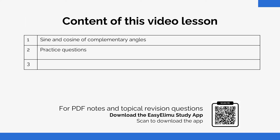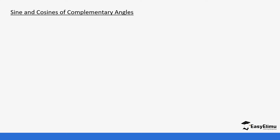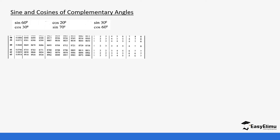We are looking at the relationship between sine and cosine with angles that complement each other. For complementary angles, we are going to check these angles from the table, starting with sine 60.